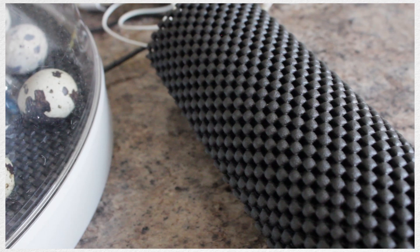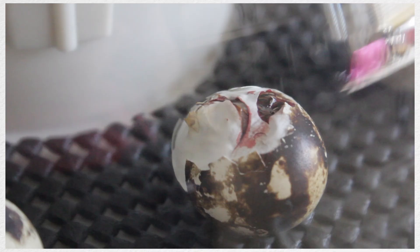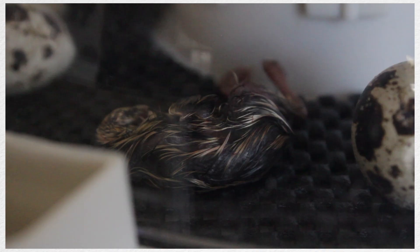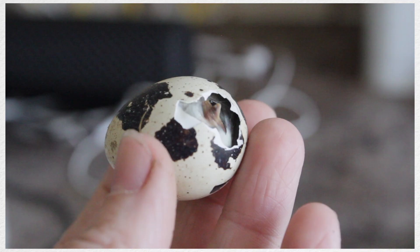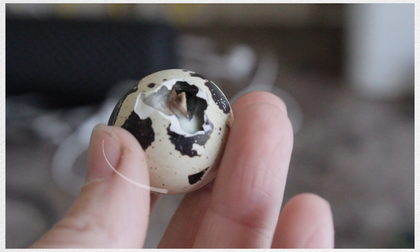On the incubator, I just bought an anti-slip mat from Home Bargains, cut it into a circle and put it in there. It makes it a lot easier for them to hatch because every time they move, the eggshell doesn't just rock around.